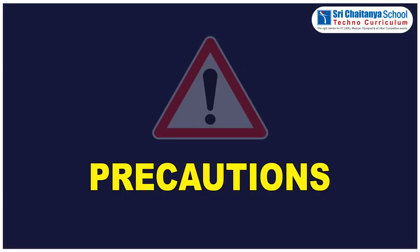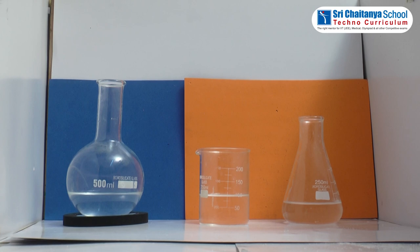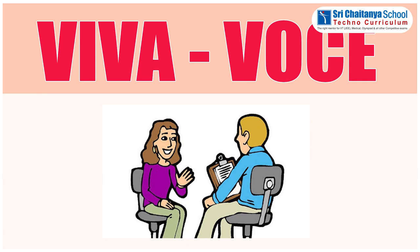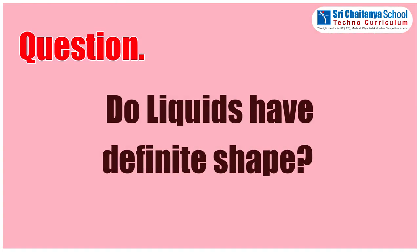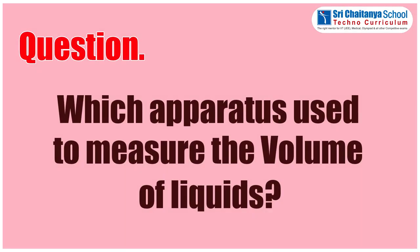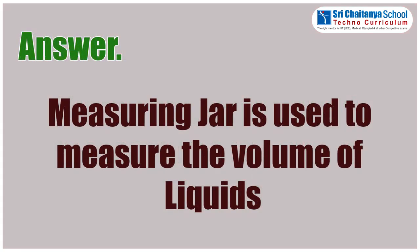It is a precautionary measure to handle glassware with care. Based on this experiment, I will ask a few questions. Do liquids have a definite shape? Anyone would like to answer? The shape of liquids depends on the shape of the container you pour them into. The second question is: which apparatus is used to measure the volume of liquids? The answer is: a measuring jar is used to measure the volume of liquids.